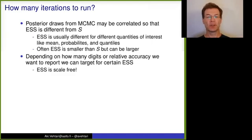Depending on how many digits or relative accuracy we want to report, we can target for certain ESS. So we can target for that at least ESS of 100 or ESS at least 2000. A nice thing now about the effective sample size is that it's scale free. It's just enough that we know how many digits we want to report.